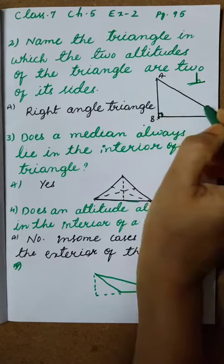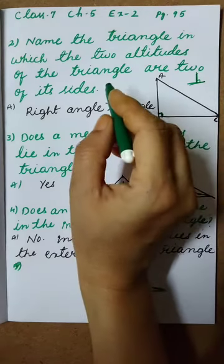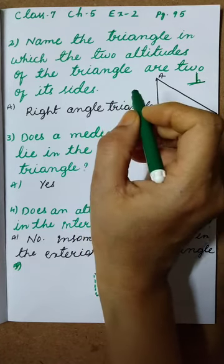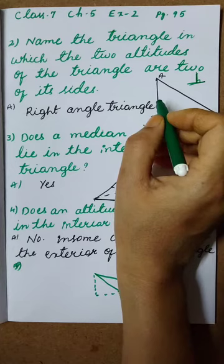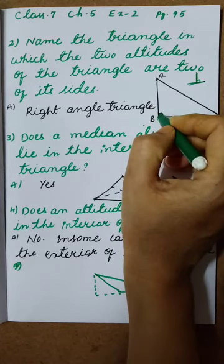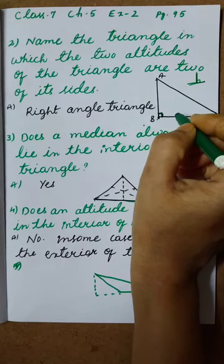The answer is right angle triangle. The question is: in which triangle are there two altitudes that are sides? In a right angle triangle, two altitudes are there. First of all, what is the meaning of altitude?